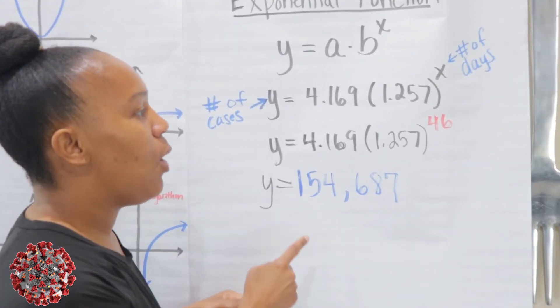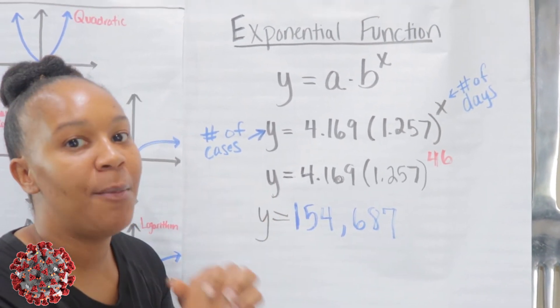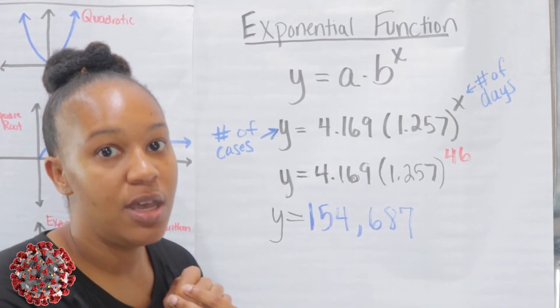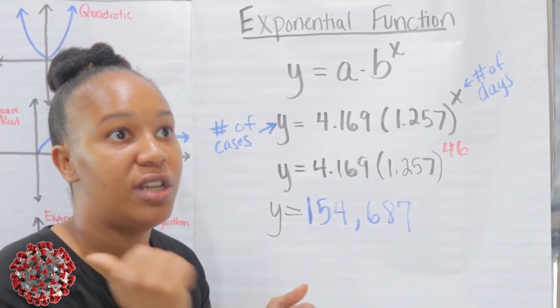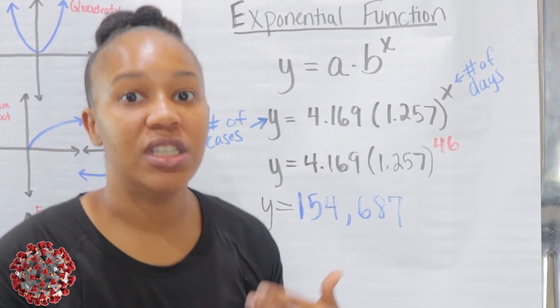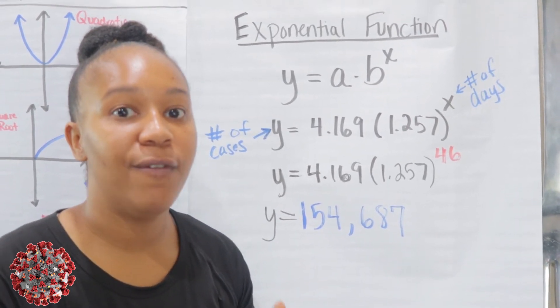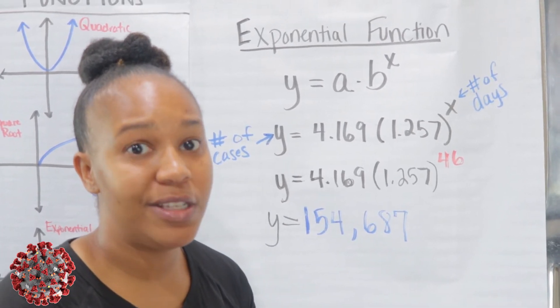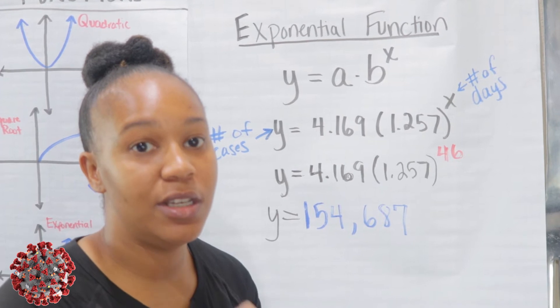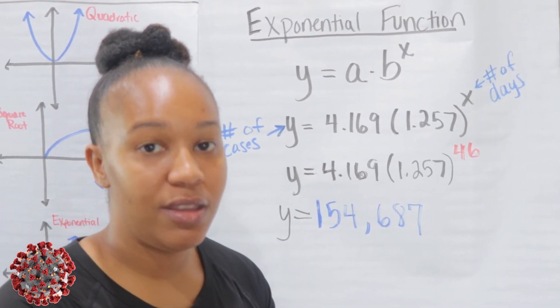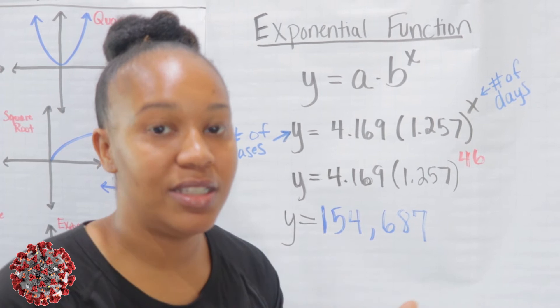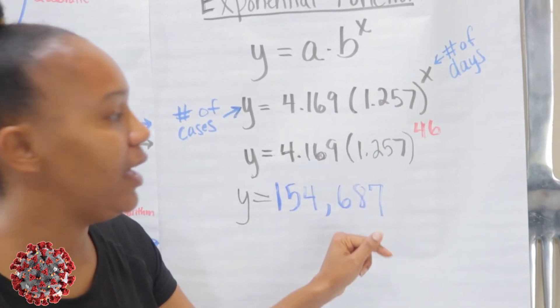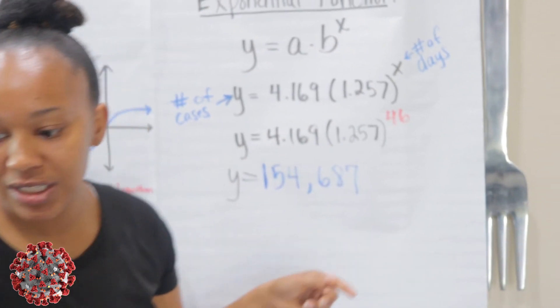Okay, so I want to know how many, I want to use this equation to model how many cases we can expect at the end of the month, which is March 31st. And so today, or yesterday, March 25th, was day number 40. So six days out will be day number 46. So March 31st, that day, day number will be 46. Again, that's because yesterday, the 25th, was the 40th day. Six days out, I just add six to 40 and it gives me 46. So I'm going to plug in 46 for the number of days, and then I'm going to plug this into the calculator.